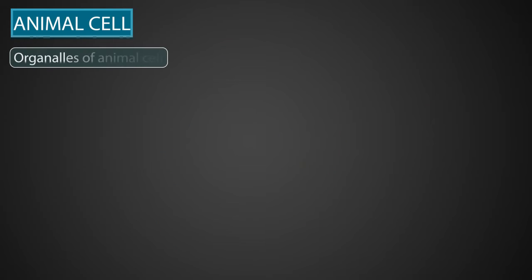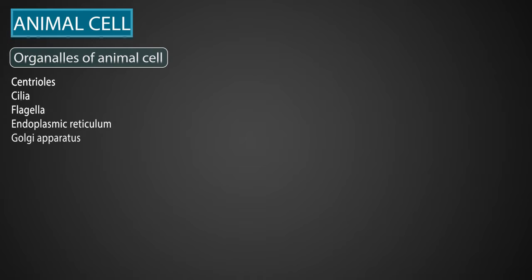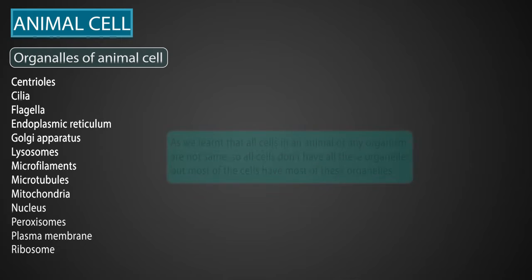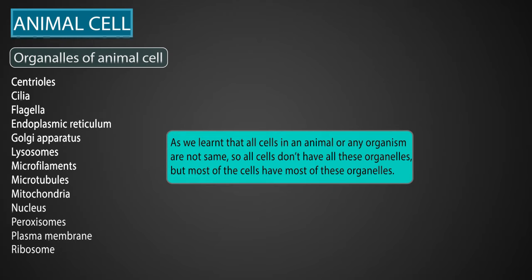Various types of organelles in animal cells are centrioles, cilia, flagella, endoplasmic reticulum, Golgi apparatus, lysosomes, microfilaments, microtubules, mitochondria, nucleus, peroxisomes, plasma membrane, and ribosomes. As all cells in an animal are not the same, not all these cells have all these organelles, but most of the cells have most of these organelles.